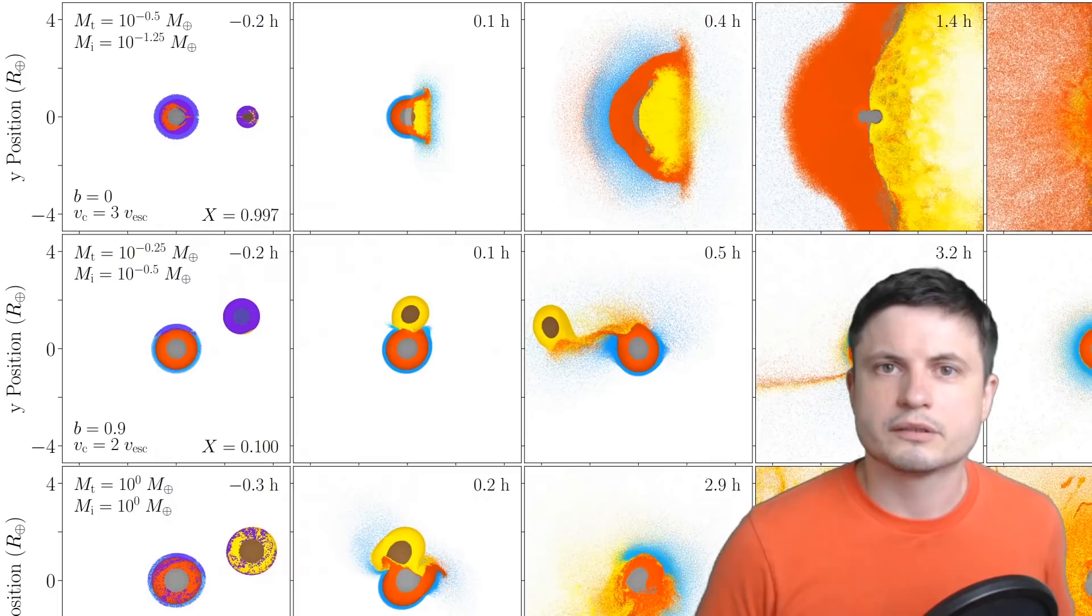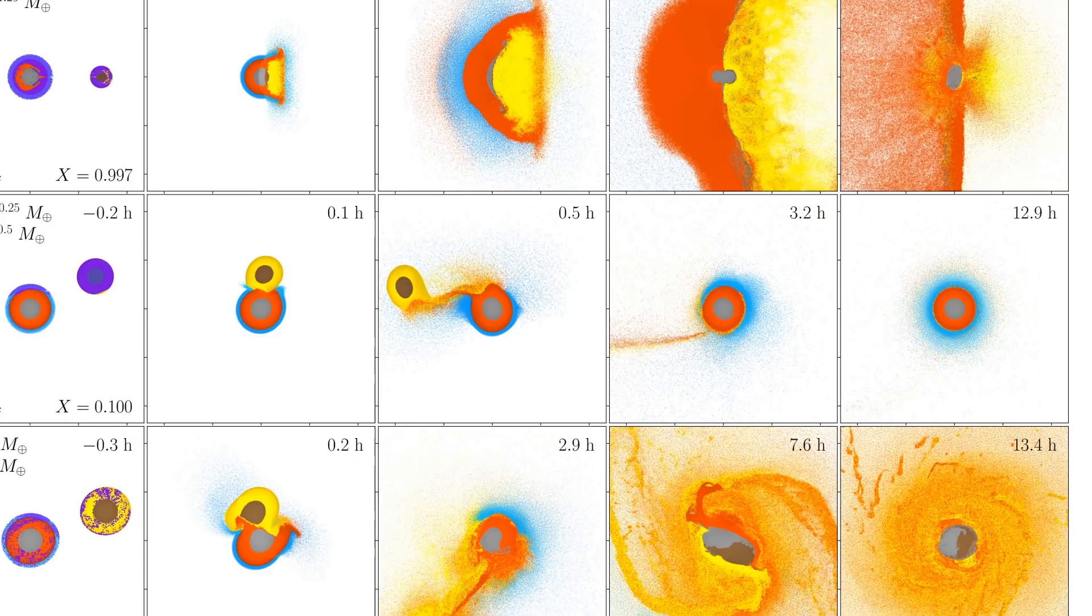So they varied the size, the angle and also the speed of the object colliding with imaginary planet Earth to discover how all of this transforms with time and how the atmosphere changes as well. And they did have some really interesting discoveries.